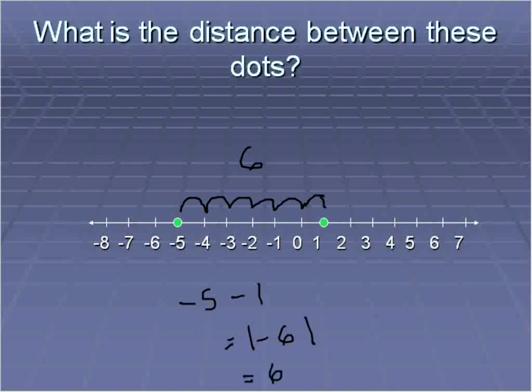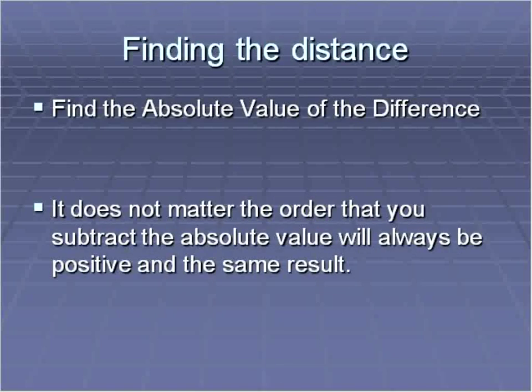So you find the difference first. And you can do that subtracting in either direction. And then you take the absolute value as shown here. And that'll give you a positive distance. Because distances are always positive. Here are the steps listed for you again. You find the absolute value of the difference. It doesn't matter the order that you subtract. But the absolute value will always be positive and the same result.